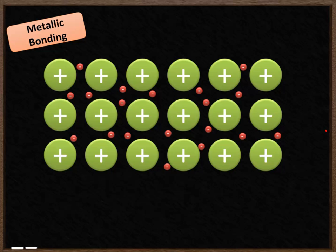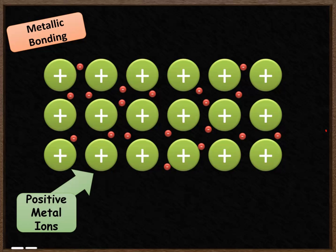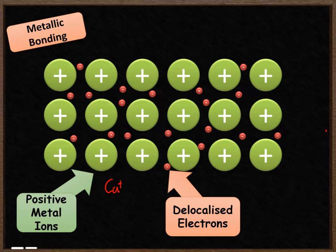You'll notice that there are two things in my metallic bonding. There are these green positive metal ions. So if this was copper these would be Cu plus ions. And around those positive metal ions are these negative delocalised electrons. These electrons are no longer attached to your copper ions. That means that these electrons are free to move.